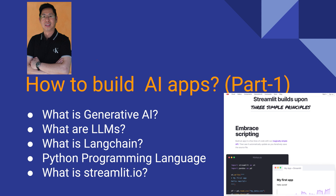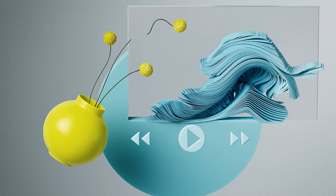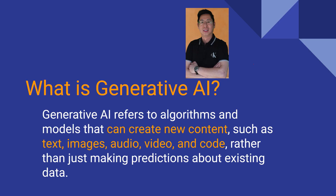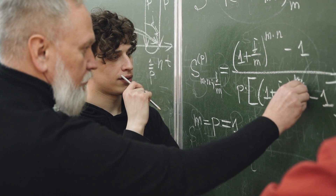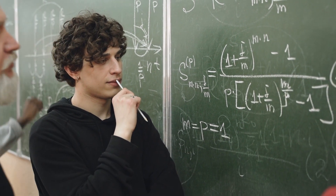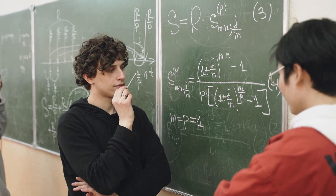We will be using Streamlit IO for the app interface. Generative AI refers to algorithms and models that can create new content such as text, images, audio, video, and code, rather than just making predictions about existing data — unlike traditional machine learning approaches like linear regression or gradient descent.